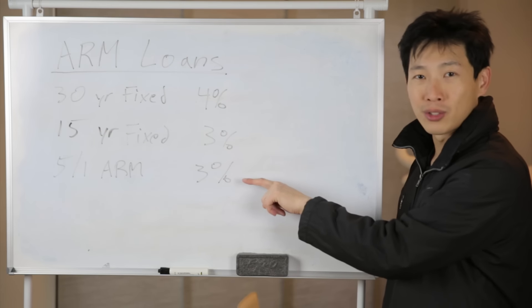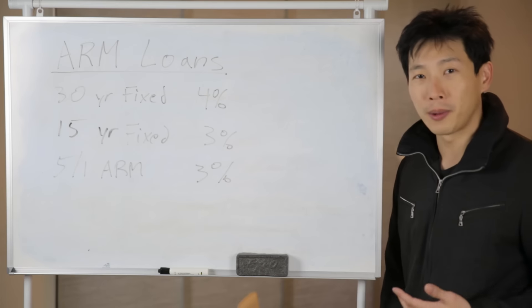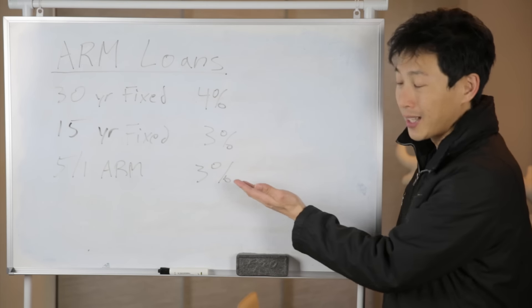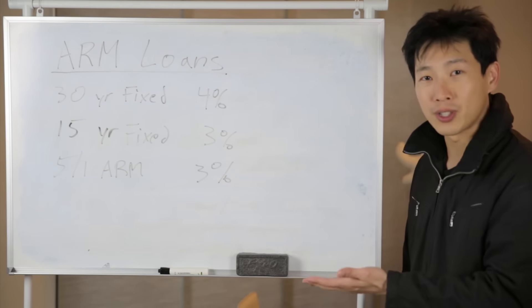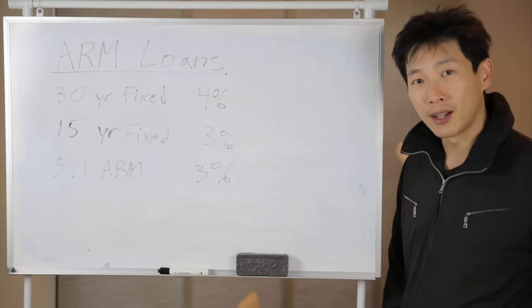So instead of getting a 30-year fixed at 4%, you can go, hey, I can reduce my interest rate a bit and then you can afford a little bit more home and pay a little bit cheaper for the 5 years coming and then you can get a 5-1 ARM.